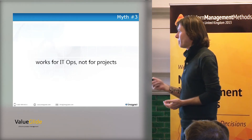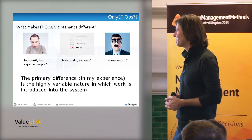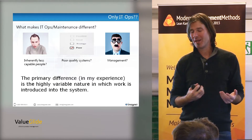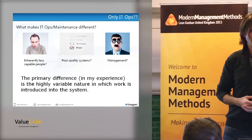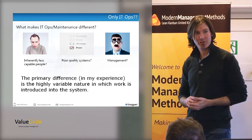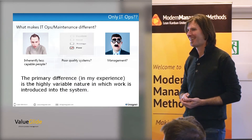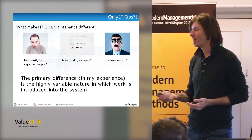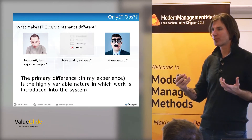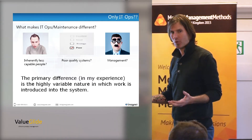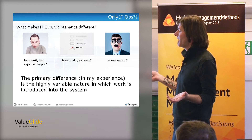Myth number three is that Kanban works for IT ops and not for projects. What makes ops and projects different? In my experience, the primary difference between ops work and project work is just the highly variable nature in which ops work will be discovered. We don't actually plan for outages or bugs that need to be fixed right now. That's really the only difference I've seen. So when we say that Kanban can't work for projects, it's kind of wrong.